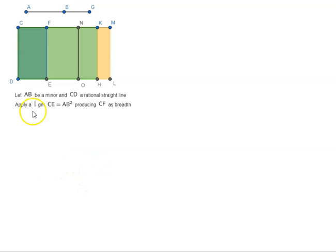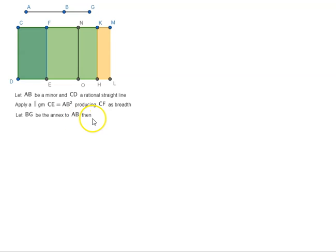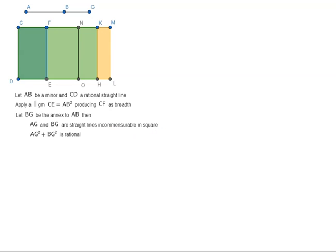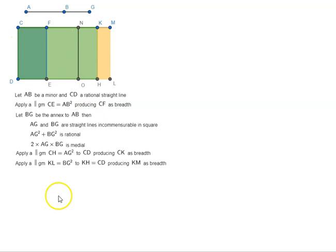Let us see how we can prove this. Apply a parallelogram CE equal to AB² producing CF as breadth. Let BG be the annex to AB. Now we know that AB is a minor and BG is the annex to AB. We apply a parallelogram CE equal to BG² to CD producing CK as the breadth, and again apply a parallelogram CL equal to BG² to KH, which is equal to CD, producing KM as breadth.